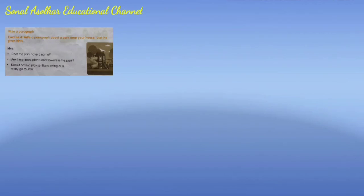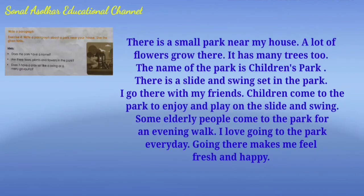Exercise 4 - Write a paragraph about a park near your house. Use the given hints. There is a small park near my house. A lot of flowers grow there. It has many trees too. The name of the park is Children's Park. There is a slide and swing set in the park. I go there with my friends. Children come to the park to enjoy and play on the slide and swing. Some elderly people come to the park for an evening walk. I love going to the park every day. Going there makes me feel fresh and happy.